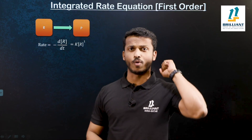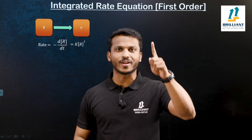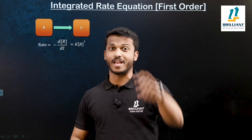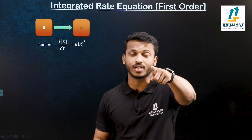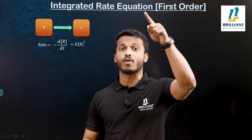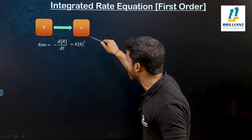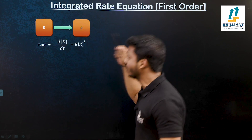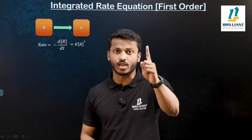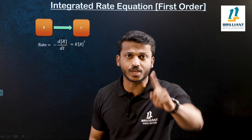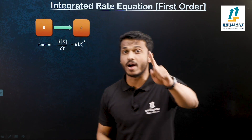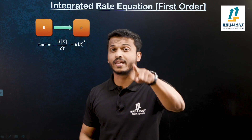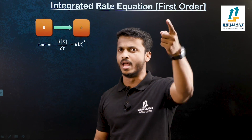Why is the power 1? Because it's a first order reaction. What do you mean by the order of a reaction? It is the sum of the powers of the concentration terms in a rate equation. So this is the major equation: rate is equal to minus dR by dt, that is equal to k into R to the power 1.